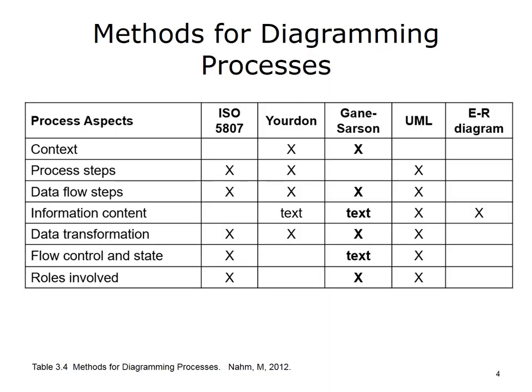Gane and Sarson represented context, data flow, and data transformation through one diagram type: the Dataflow Diagram (DFD). Their approach used a high-level DFD to show context, and a more detailed — or series of more detailed — diagrams to show data flow steps. Data transformation is represented on the DFD by a process symbol that indicates that data transformation occurs.